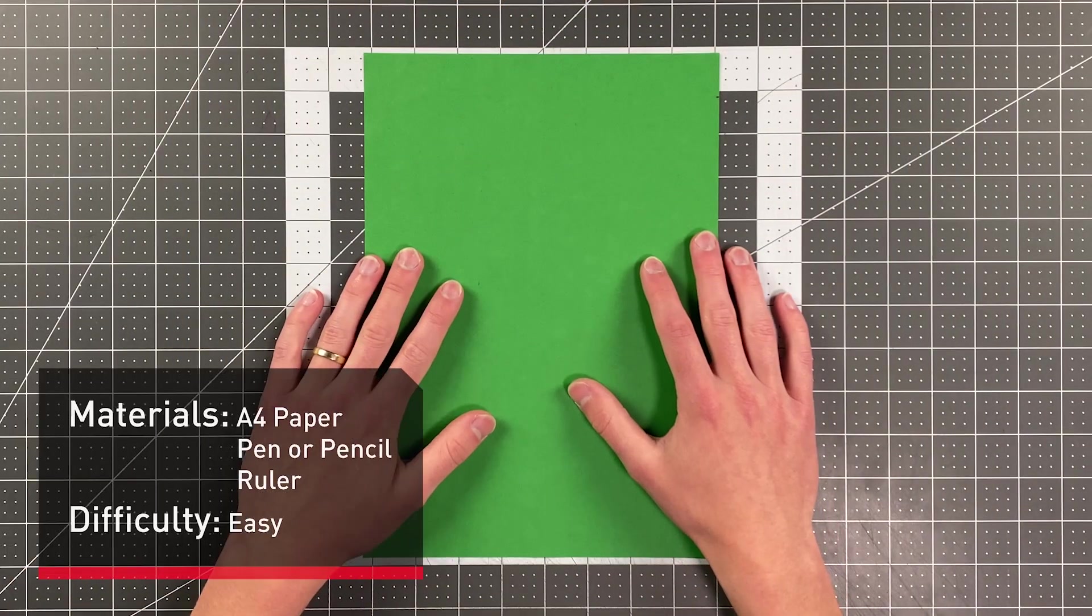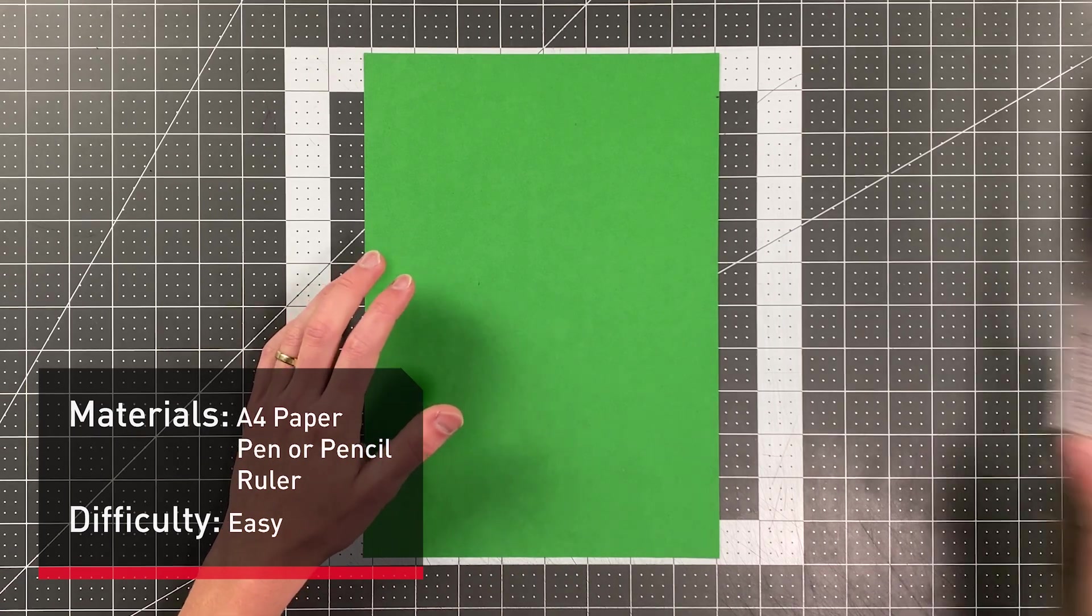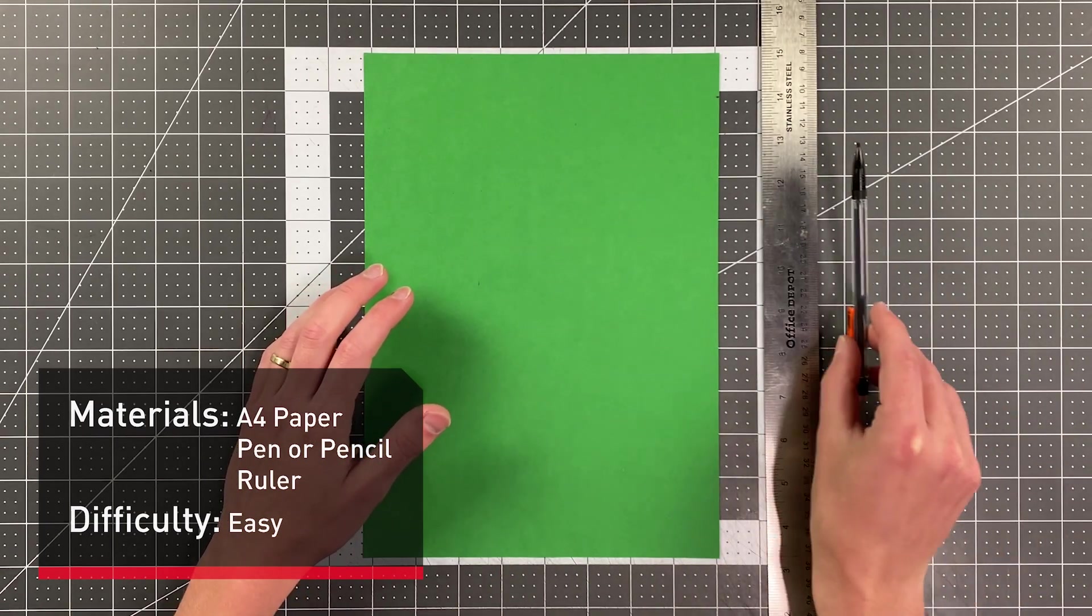All you will need in order to fold this paper airplane is an A4 sheet of paper, a ruler, and something to mark with.